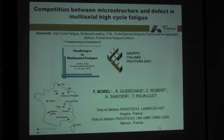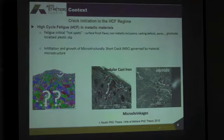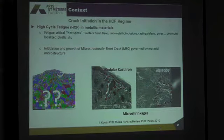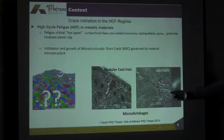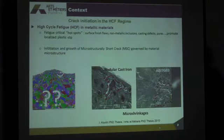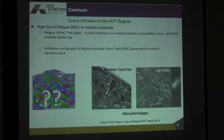The title of this presentation is 'The competition between microstructure and defect in multi-axial fatigue,' and more particularly in high cycle fatigue. We are all aware that in high cycle fatigue, most of the time the cyclic plastic strain and the consequent crack initiation is limited to a few critical hot spots where some material flaws exist — such as micro-shrinkage flaws in non-metallic cast alloys, or cast aluminum alloys, or non-metallic inclusions — any kind of flaws that promote localized plasticity and crack initiation.